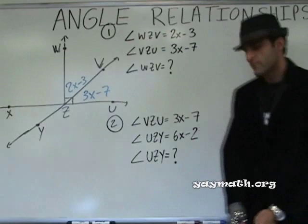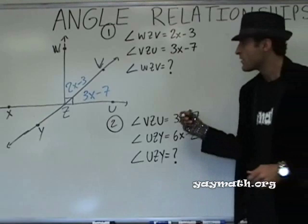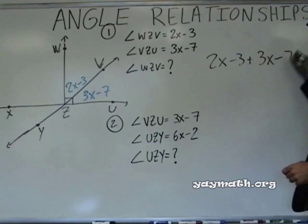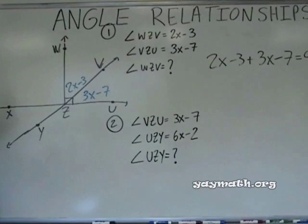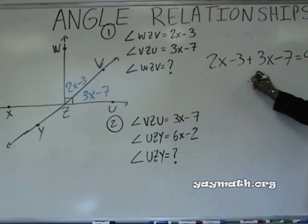So, these two angles add up to 90. What's our equation? Yes, sir? 2X minus 3 plus 3X minus 7 equals 90. Good. Very good. Okay. You guys are on this. I'm happy. So, combine like terms, and here we go. What's 2X and 3X together? Everyone together? 5X.